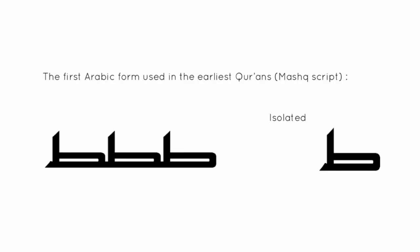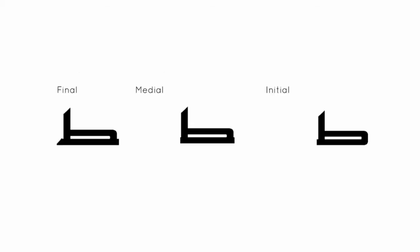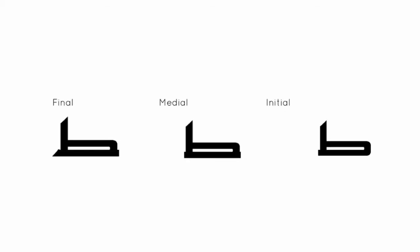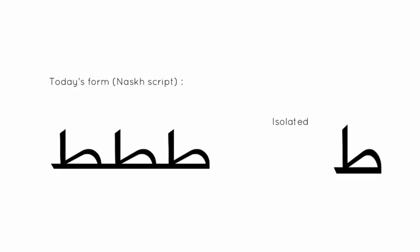The first Arabic form used in the earliest Qur'ans was Mashq script. The later official Arabic script derived from Mashq was called Mashq Kufi, or simply Kufi. Today's form is Nasq script.